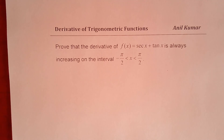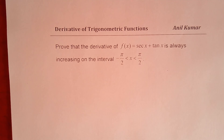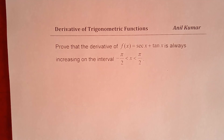Manil Kumar, sharing with you a question from my subscriber on derivatives of trigonometric functions. Let me thank all my subscribers and viewers for posting questions and watching my videos. The question here is: prove that the derivative of f of x equals secant x plus tan x is always increasing on the interval x greater than minus pi by 2 and less than pi by 2.